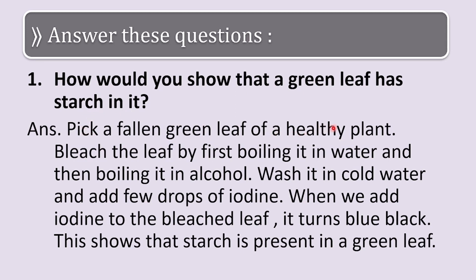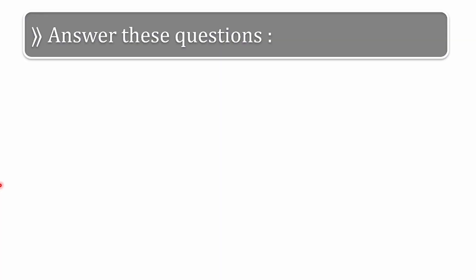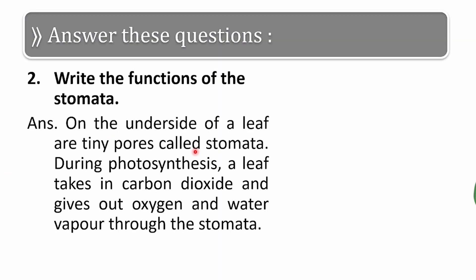Long answer Q1: how would you show that a green leaf has starch in it? Pick a fallen green leaf of a healthy plant. Bleach the leaf by first boiling it in water and then boiling it in alcohol. Wash it in cold water, then add a few drops of iodine. The leaf turns blue-black, which shows that starch is present in the green leaf.